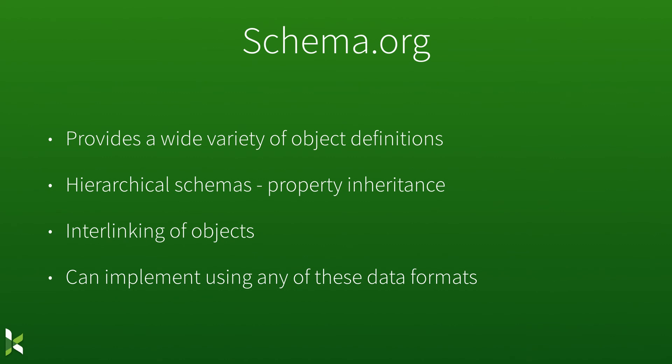The properties will provide a wide definition of snippets of information about this particular item. These properties are also hierarchical — so things have properties, Creative Works have properties, Articles have properties, and they all inherit. So an Article gets all the stuff that a Thing has and all the stuff that a Creative Work has, and then it has its own special things that go along with that. Also, schemas don't have to be independent — you can interlink objects and you can nest objects within one another. For example, if you have an article and you've got an author box providing rich context about that person, well a Person is another schema, and so you can nest that information within your article context.